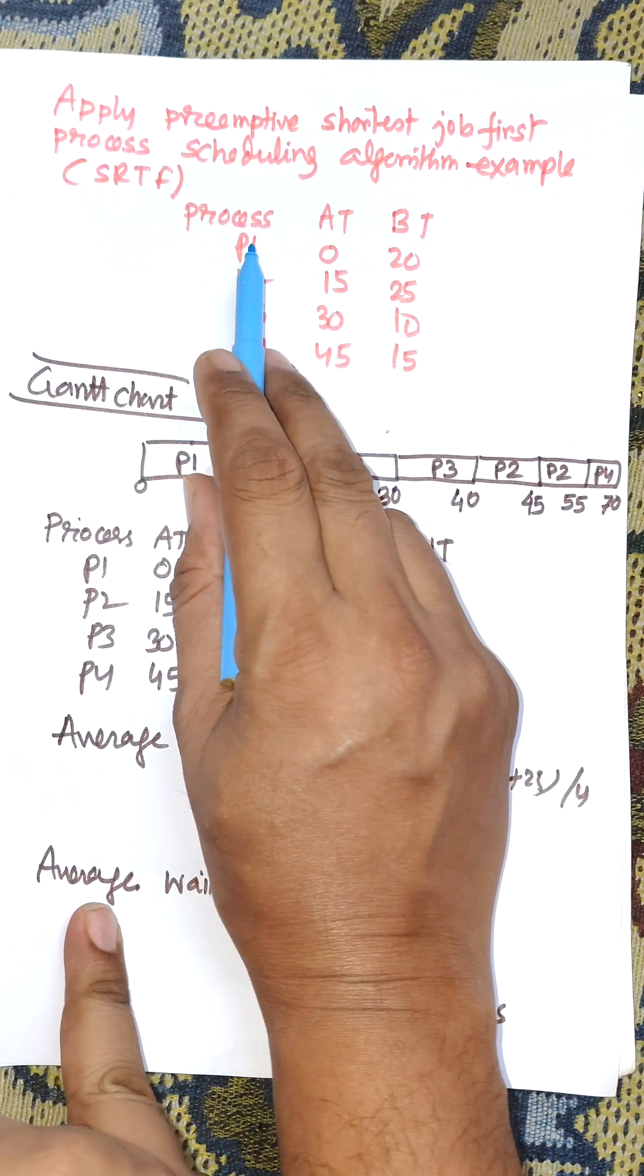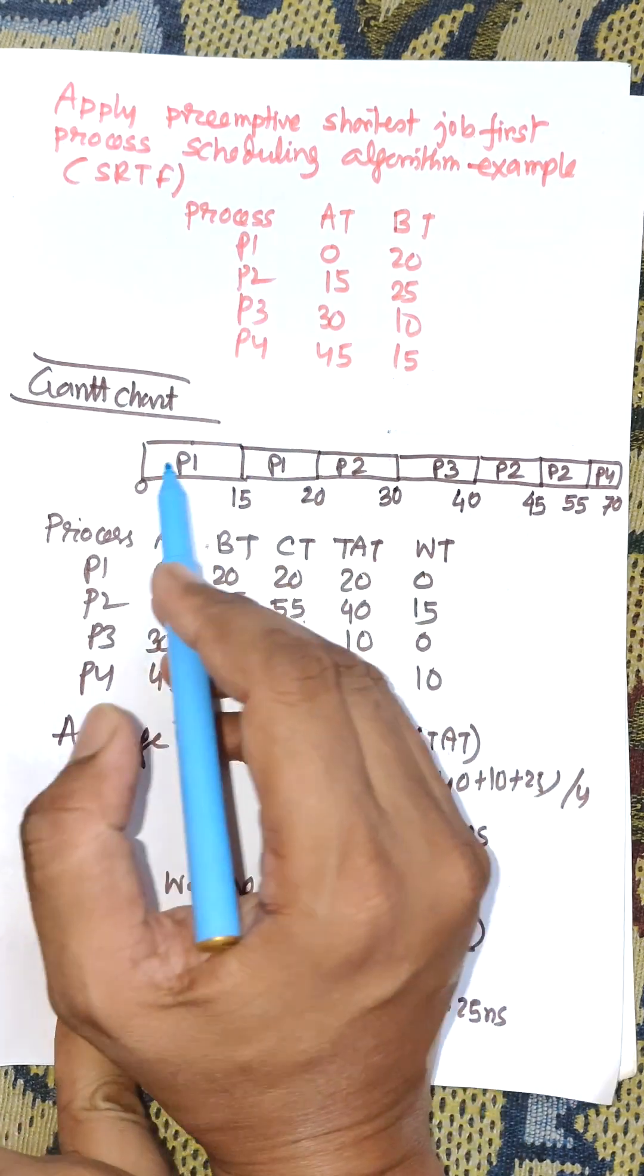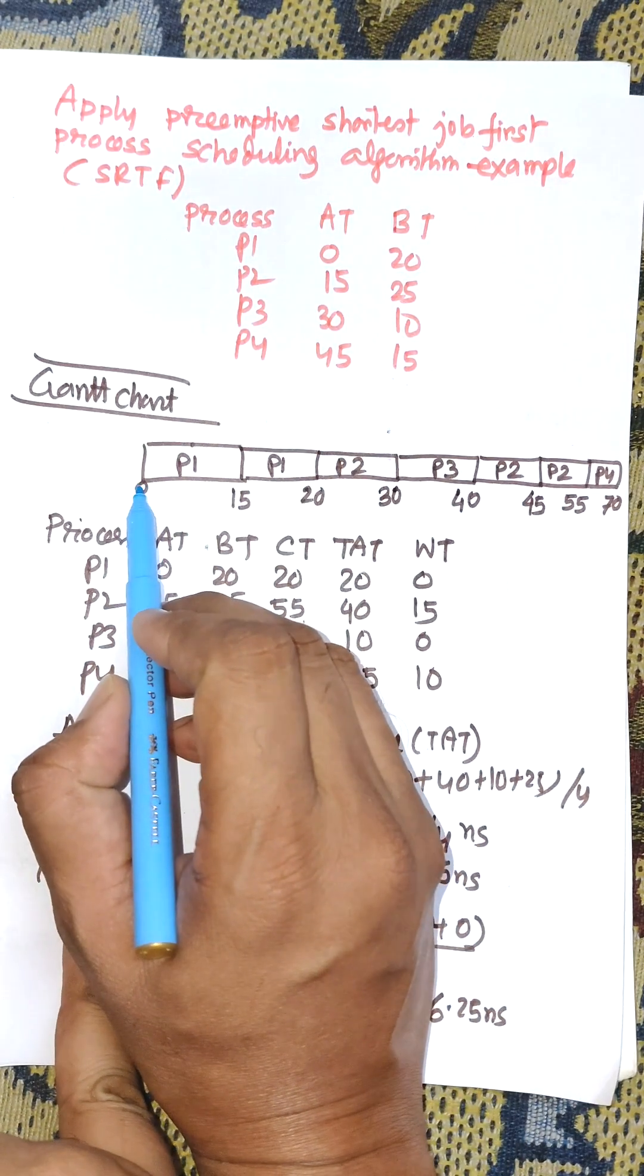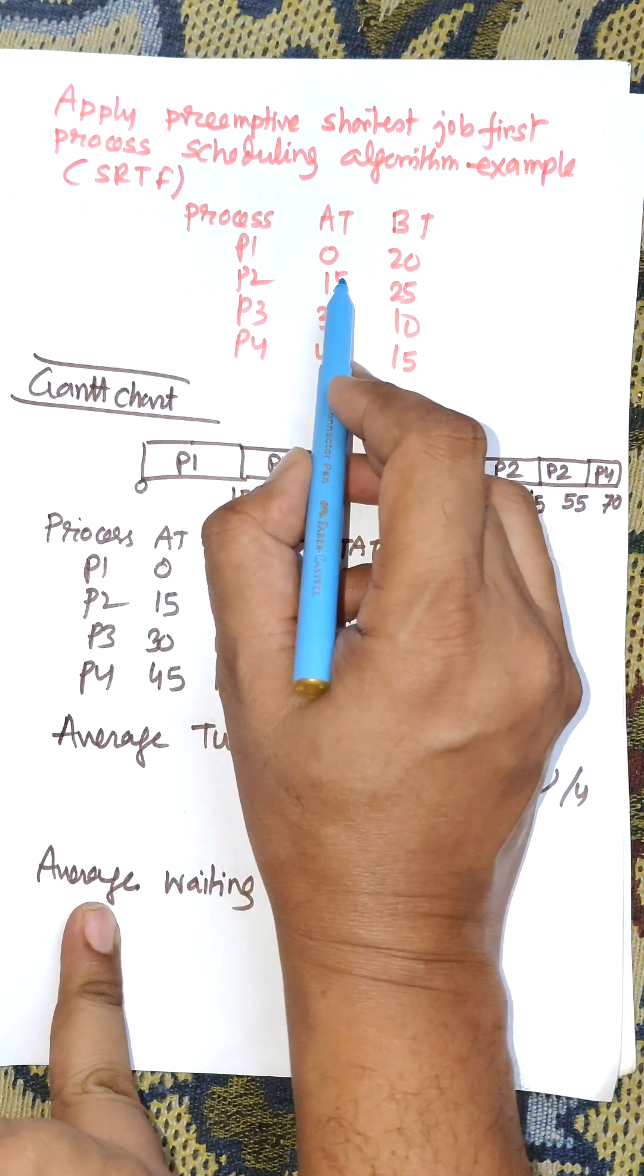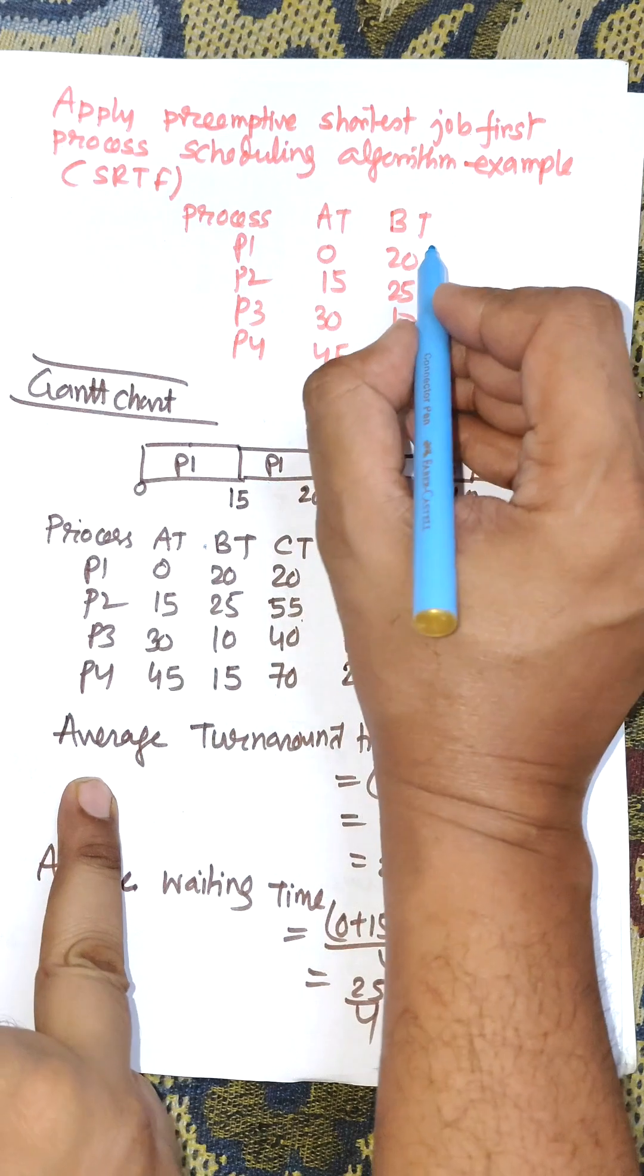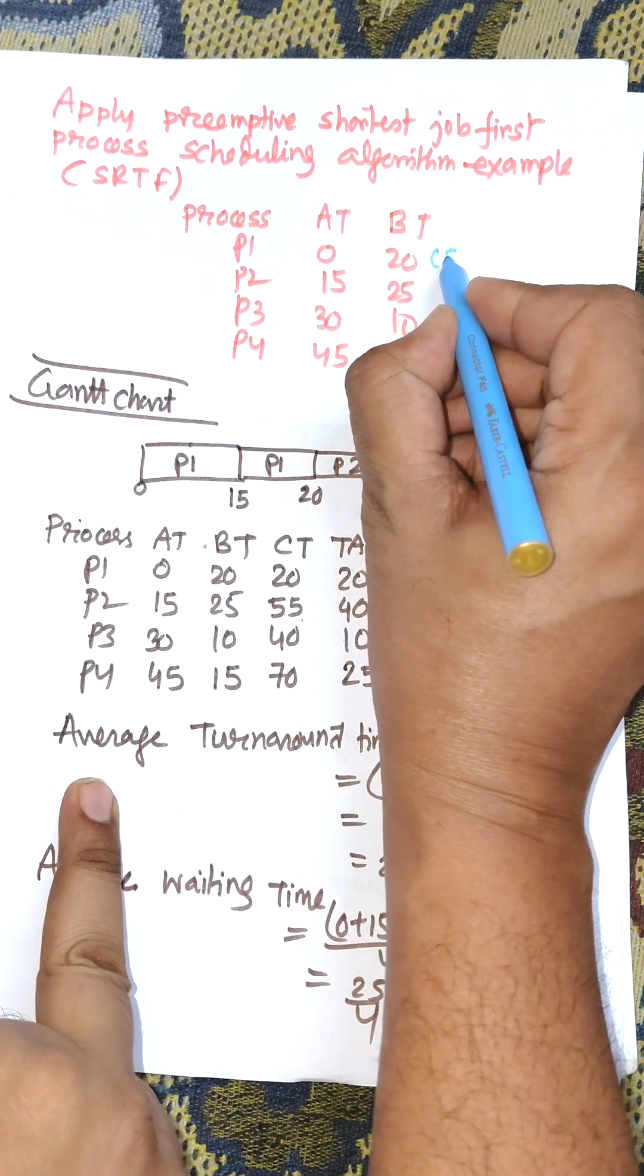The arrival time of P1 is 0, so P1 will be allocated for execution and it will continue its execution until the next process arrives. That is, P2 arrives at 15 nanoseconds. The remaining time for P1 is 5.